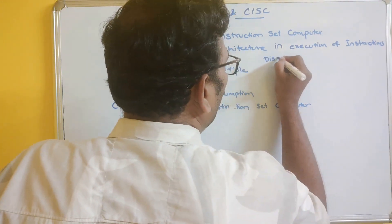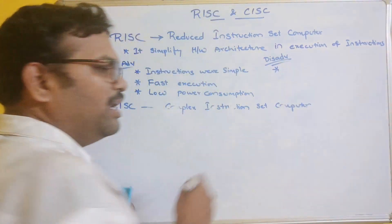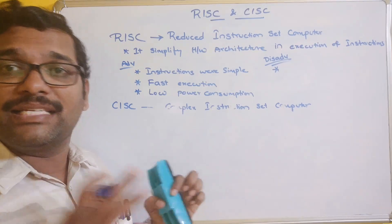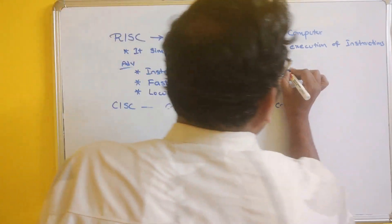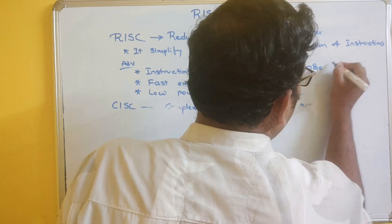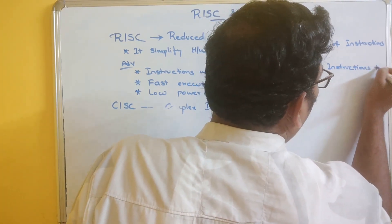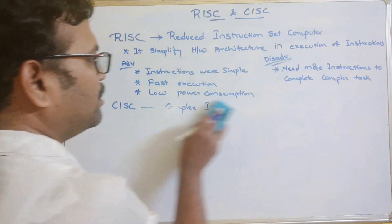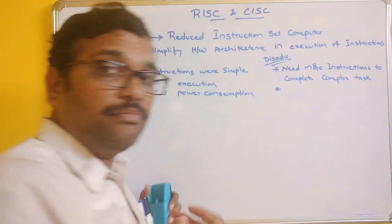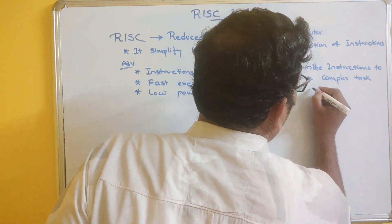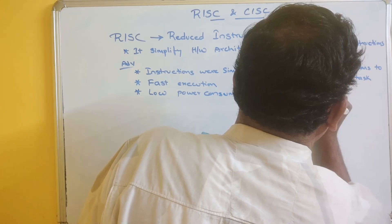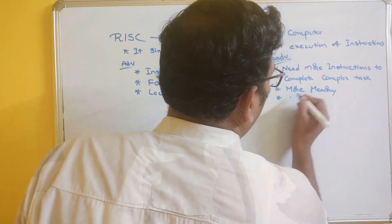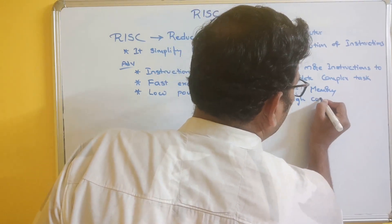There are some disadvantages of RISC. It requires more number of instructions to complete a complex task. Since the instructions are very simple, simple tasks can be easily executed, but more instructions are needed to complete complex tasks. So it obviously requires more amount of memory and is also high cost.